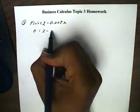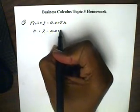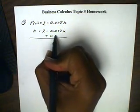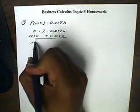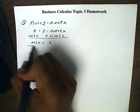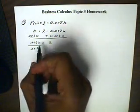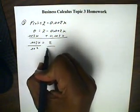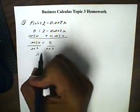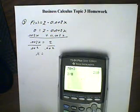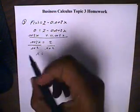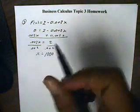So we're going to set this equal to 0 and then solve for x. Adding 0.002x to both sides, we get 0.002x equals 2. And we'll divide everything by 0.002. For x, we're going to get 2 divided by 0.002, which is 1,000. And so that's the x that we're looking for.